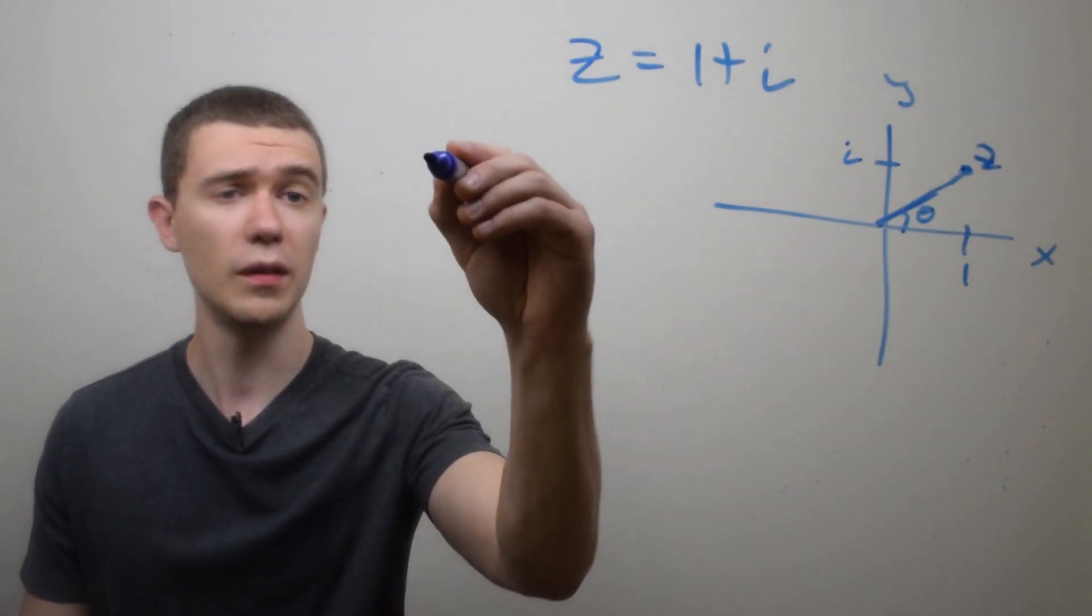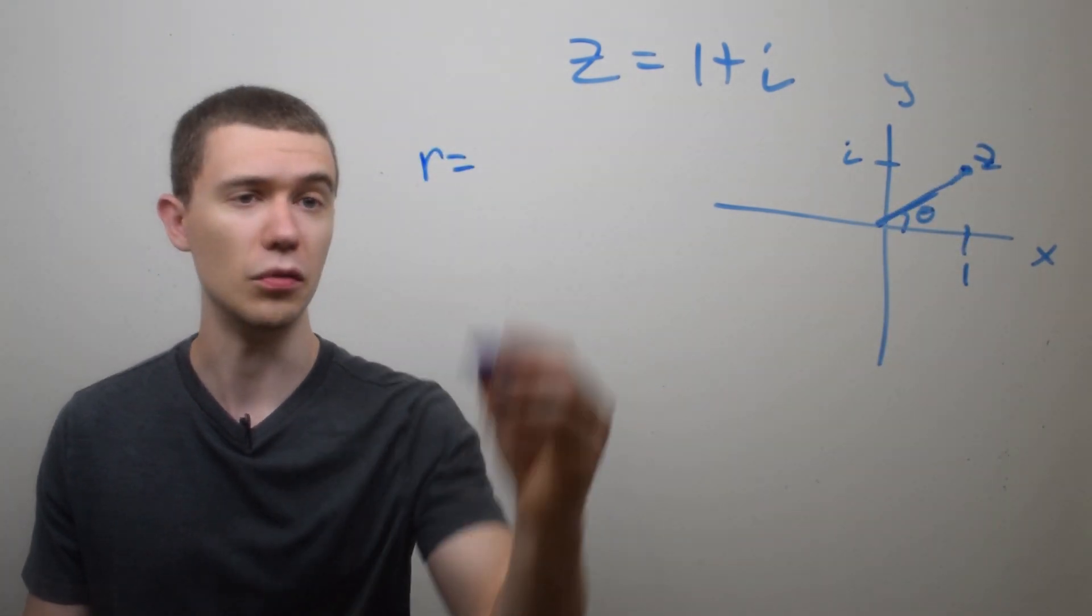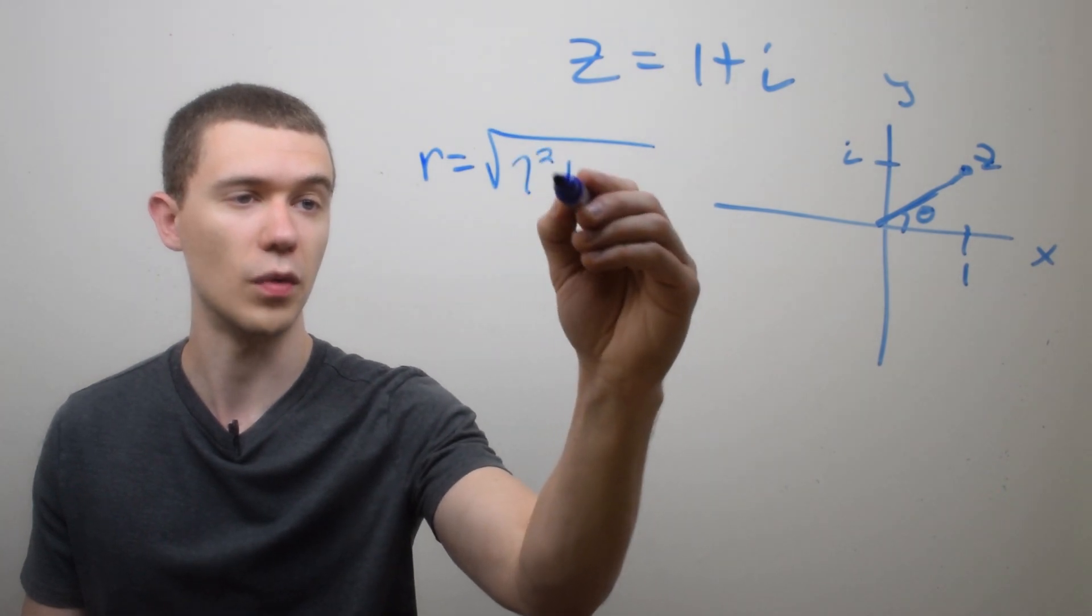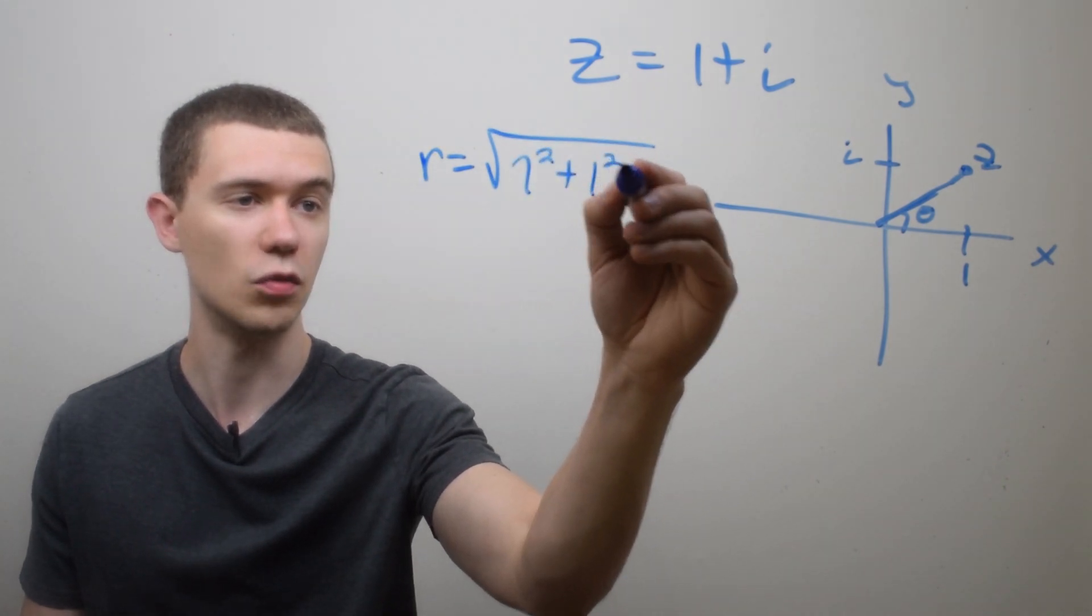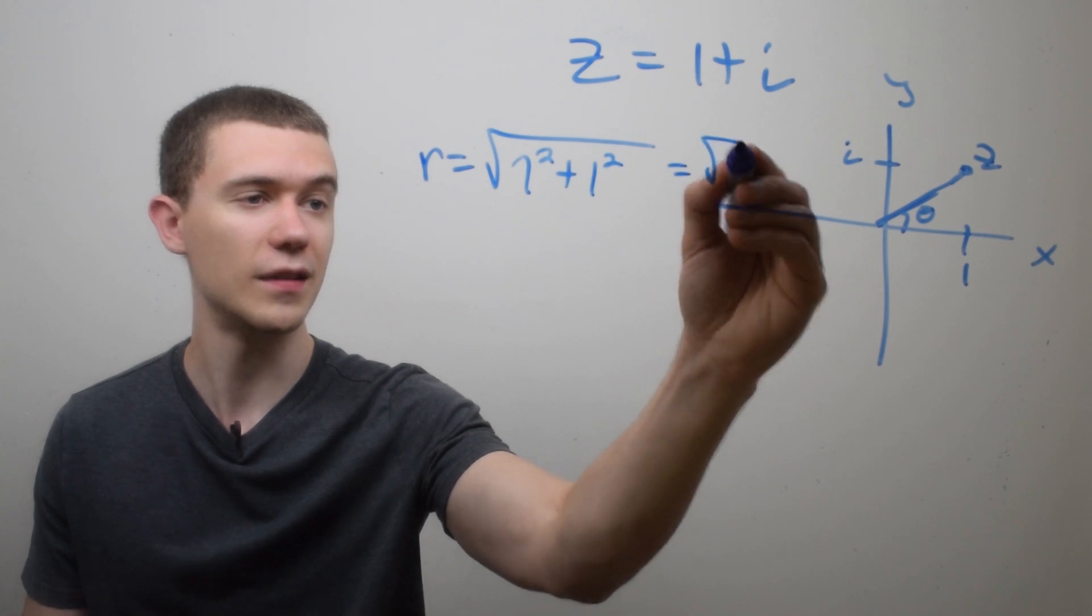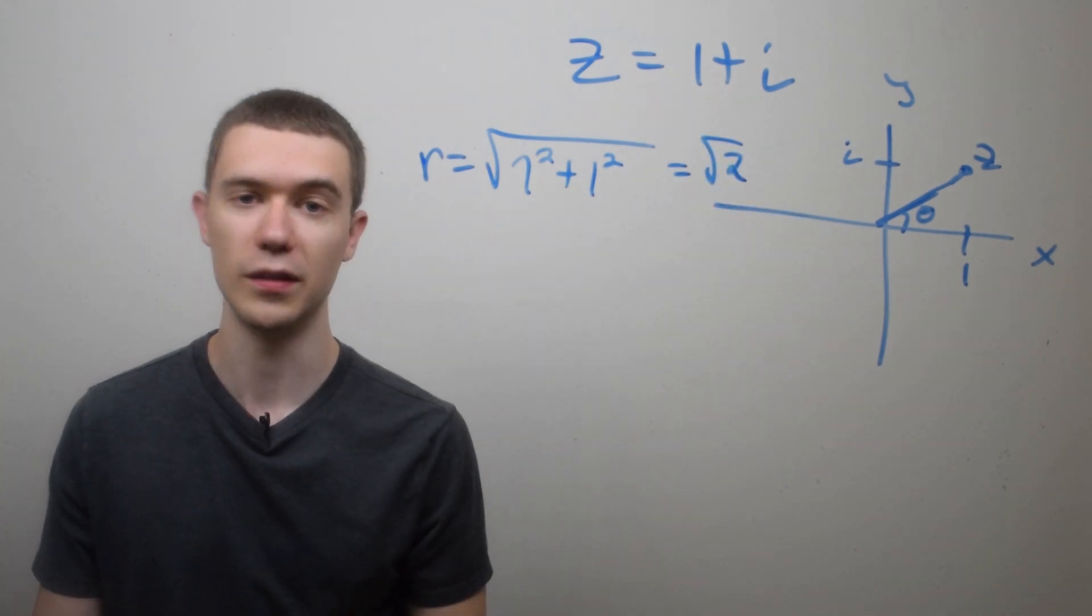So r being the modulus of z is easy to compute. It's simply the square root of the sum of the squares of the components. So in this case, just 1 squared plus 1 squared. This is square root 2. This is the modulus of z.